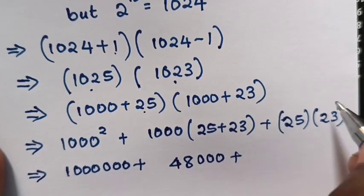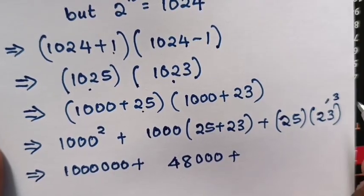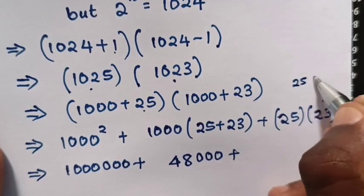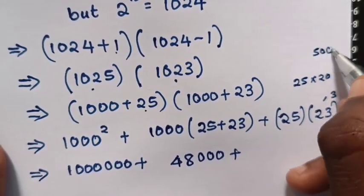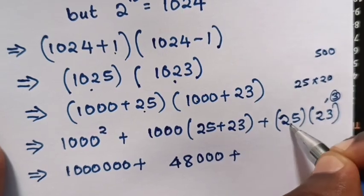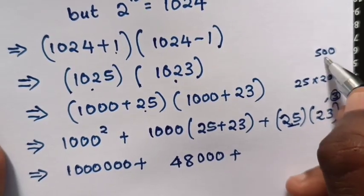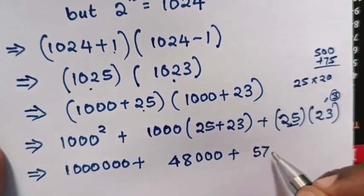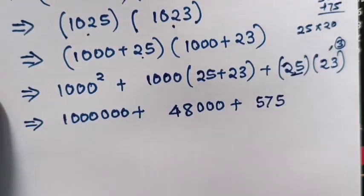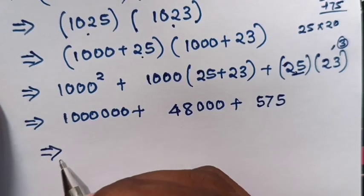From 23, you minus 3, it will be 25 times 20, which equals 500. Then 3 times 25 is 75. When you add 500 and 75, you get 575.